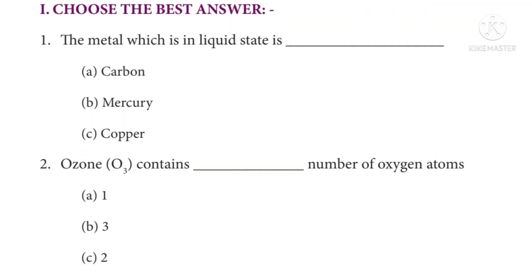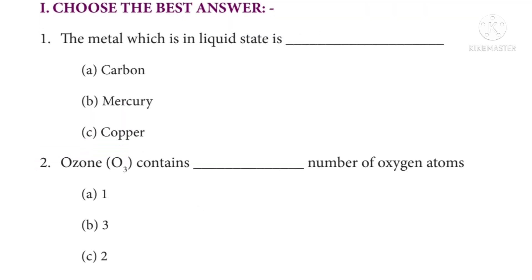Roman numeral 1, choose the best answer. Question number 1: the metal which is in liquid state is dash. Options: carbon, mercury, copper. The correct answer is option B, mercury.